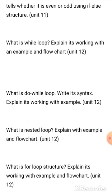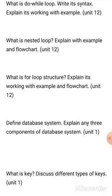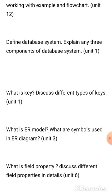From Chapter 12: what is a do-while loop — write its syntax and explain its working with an example. What is a nested loop — explain with an example and flowchart. What is a for loop structure — explain its working with an example and flowchart. From Chapter 1: define the database system and explain any three components of the database system.